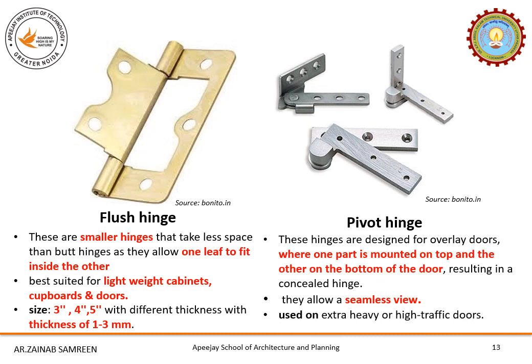Flush hinge — as the name says, flush means these type of hinges do not require a corner to be cut in the door, as one leaf — the smaller one — fits inside the other. That is why they do not leave any space or gap between the frame and the door, which gives a very clean and consistent look. They come in sizes of around 3 inches, 4 inches, and 5 inches, and are used for lightweight cabinets, cupboards, and doors.